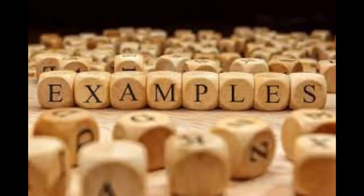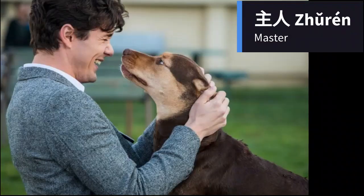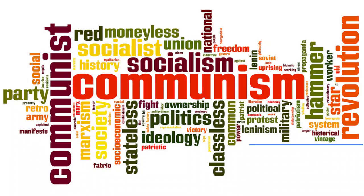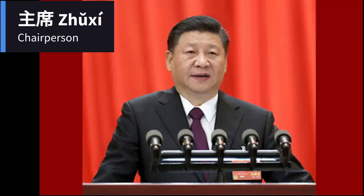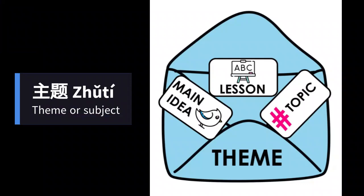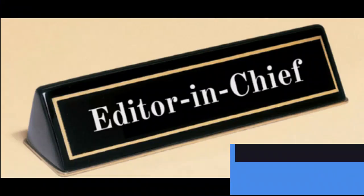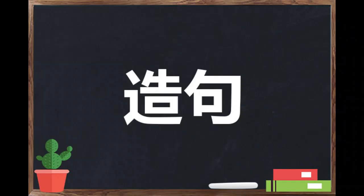Now let's see some examples. 主人 means master, host, or owner. 主意 means doctrine or ideology. 主席 means chairperson. 主题 means theme or subject. 主编 means chief editor.